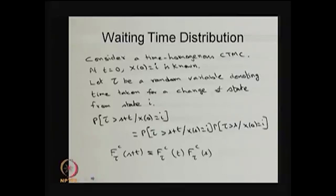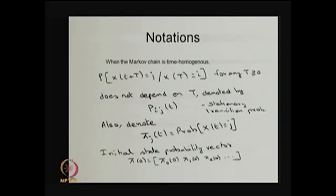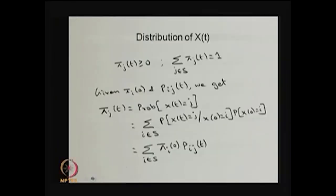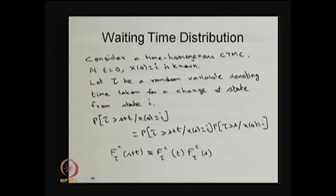Before going further, you can see the sample path of a time-homogeneous continuous-time Markov chain. The system stays for some positive amount of time in any state before moving into another state. Our interest is to find out what is the waiting time distribution — the distribution of time spent in any state before moving into any other state.